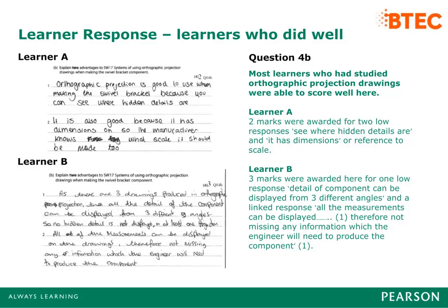Here we can compare responses from different learners. Learner A was awarded two marks for two responses: 'see where hidden details are' and 'it has dimensions or reference to scale'. Learner B was awarded three marks for one response: 'detail of component can be displayed from three different angles' (one mark), and a linked response: 'all the measurements can be displayed' (one mark), 'therefore not missing any information which the engineer will need to produce the component' (one mark).